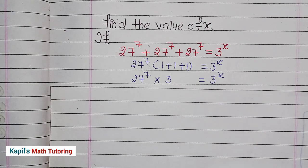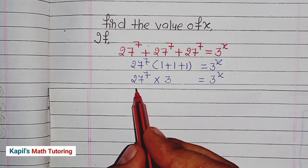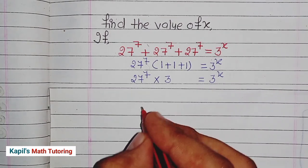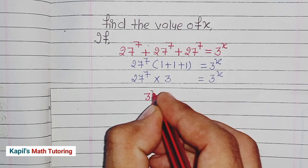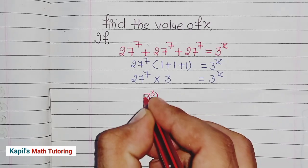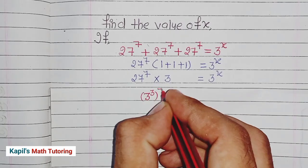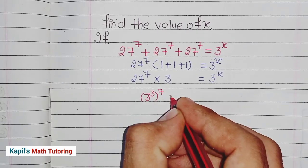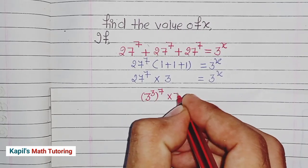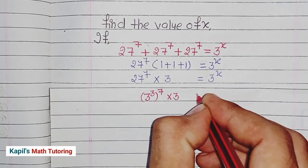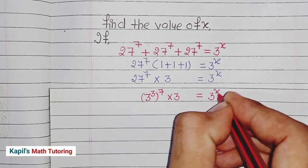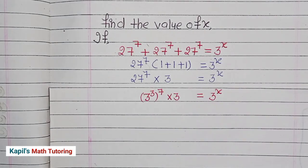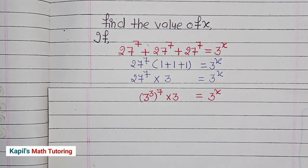Now I can write 27 in the form of 3 raised to the power 3, so the left side becomes (3 to the power 3) to the whole power 7, multiplied by 3, and this equals 3 to the power x.